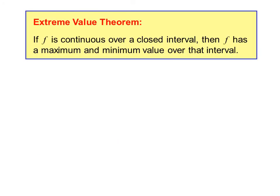The Extreme Value Theorem says that if f is continuous over a closed interval, then f has a maximum and minimum value over that interval. It is important to note that the function must be continuous and the interval must be closed. If either of those requirements are not met, then the Extreme Value Theorem does not apply.